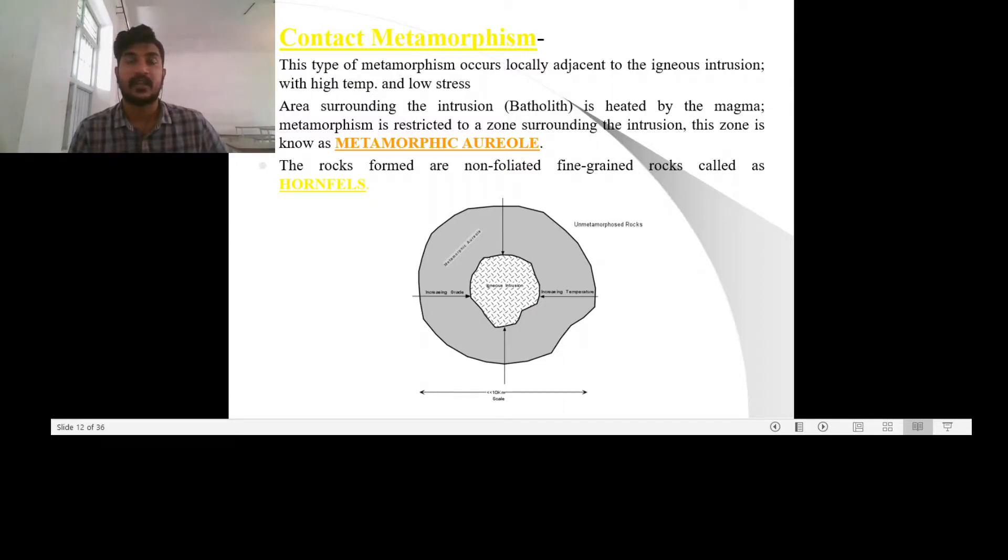A small area surrounding the rock has been subjected to the heating so that the metamorphism will be limited to a smaller area where the heat can reach. Only a small area will be subjected to heating due to the intrusion.